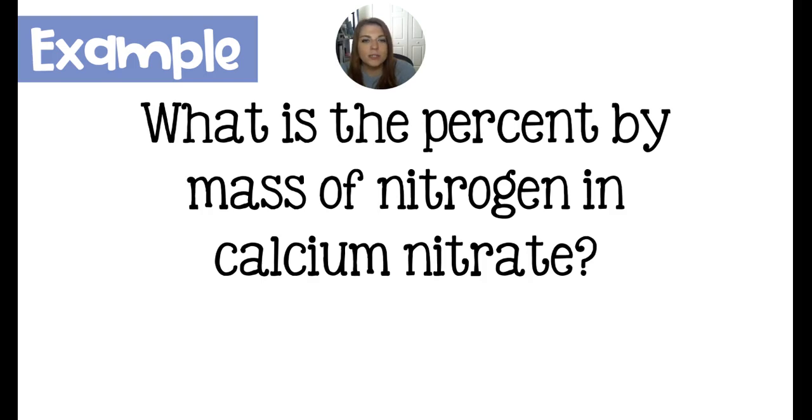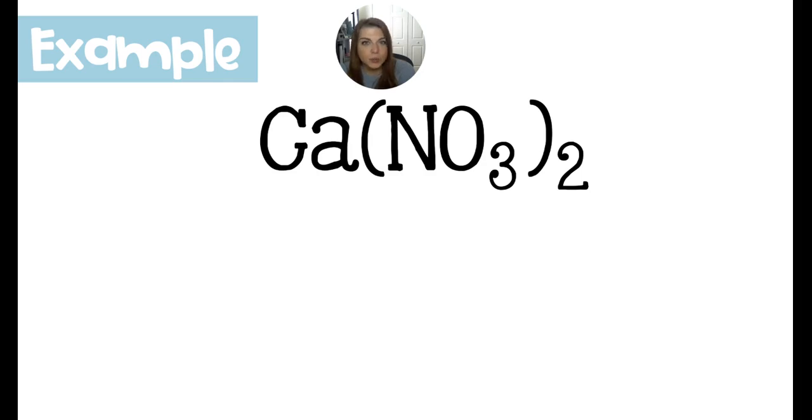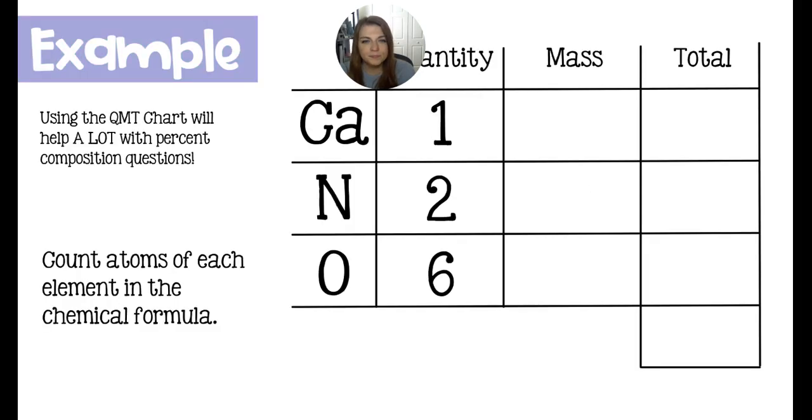Here we have a question: What is the percent by mass of nitrogen in calcium nitrate? Because we're given words, we need to figure out a formula first. Calcium nitrate is Ca(NO3)2. We get that from crisscrossing. Then we're going to plug this into the QMT chart. Q stands for quantity, M is mass, and T is total. We're going to count them from our chemical formula.